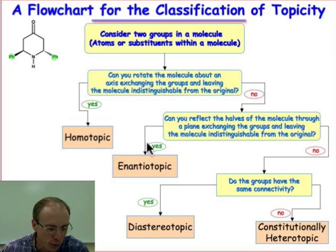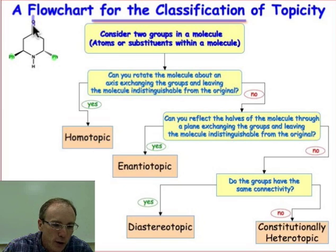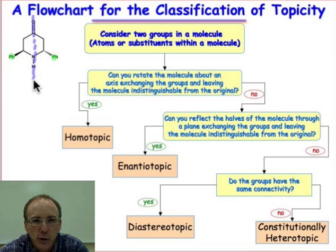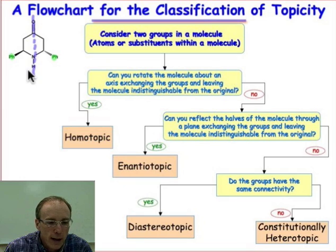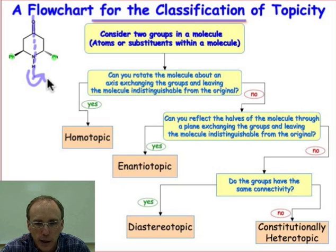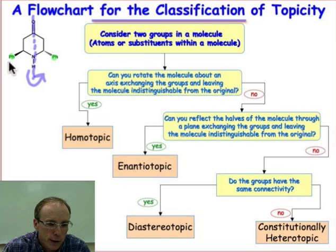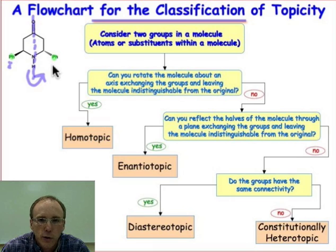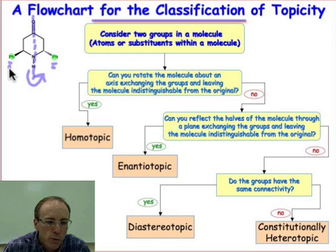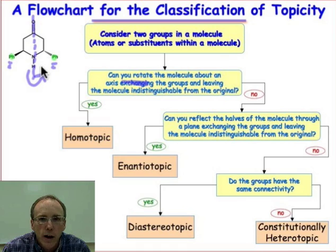Look for a rotation that is along the carbon-oxygen double bond direction — that's the axis of rotation. When I rotate the front half above the plane of the screen and the back half below the plane of the screen around that carbonyl bond axis, the phenyl group on the left that's above the screen will move below the screen and onto the phenyl group on the right. The groups are exchanged, and upon rotation that molecule looks exactly the way it did before — so this is homotopic.